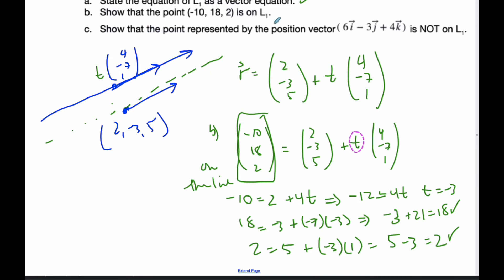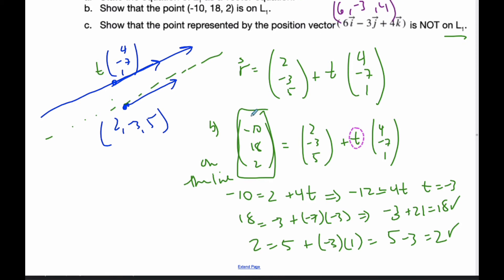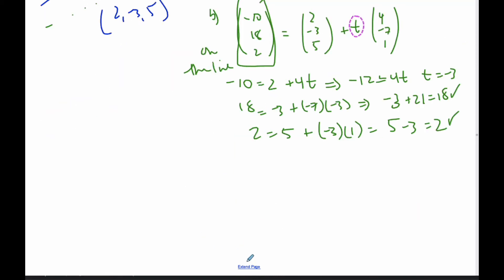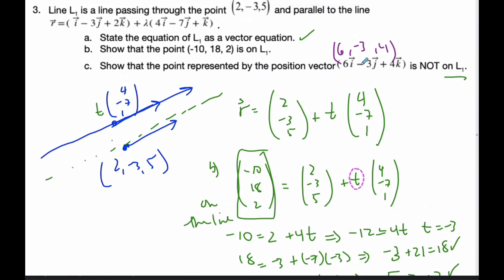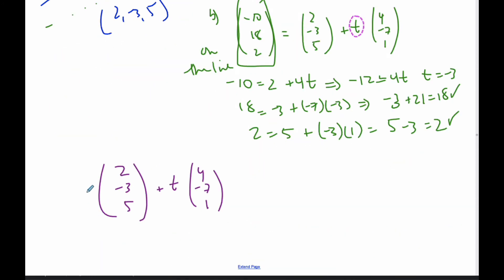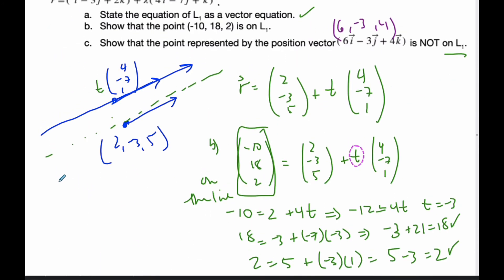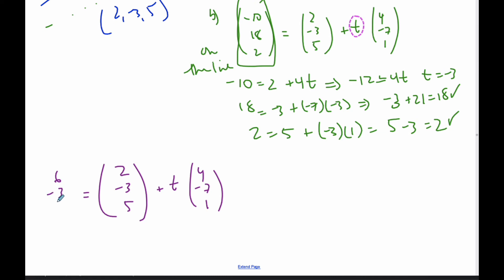For part C, we need to show that the point represented by the position vector (6, -3, 4) is NOT on L1. Using the same premise, we'll take (2, -3, 5) + t(4, -7, 1) and make it equal to (6, -3, 4).